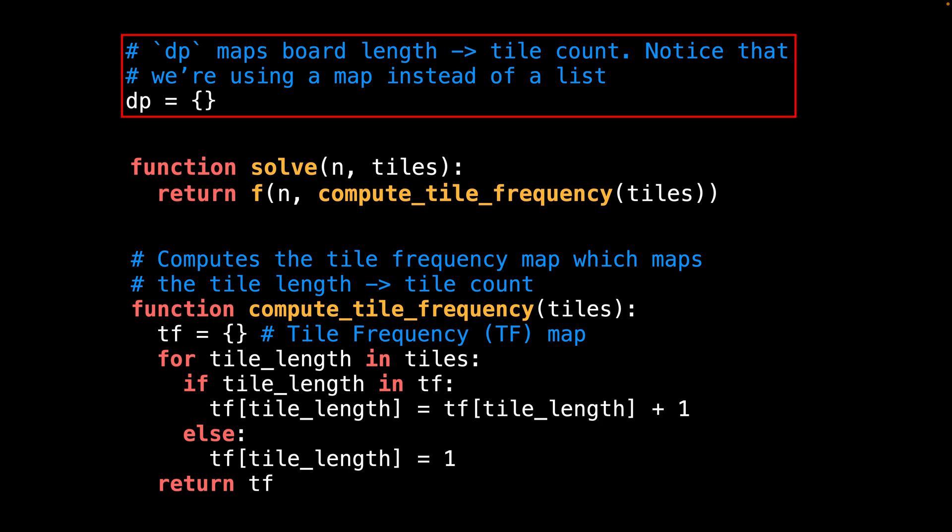On the first line, I declare a map called dp, which maps the board length to the tile count. This is where we will be storing our solutions. I decided to use a map instead of an array, because it's possible that the number of subproblems is very small. This can happen when the tile size is quite large. And by using a map, we can save some memory when the value of n is very big.